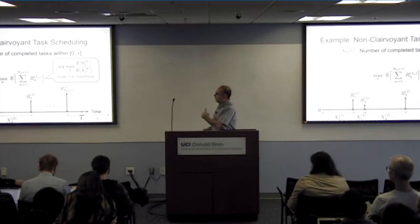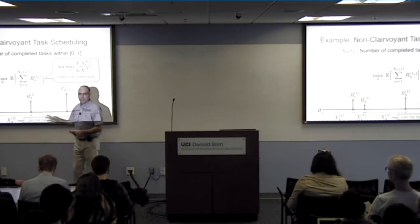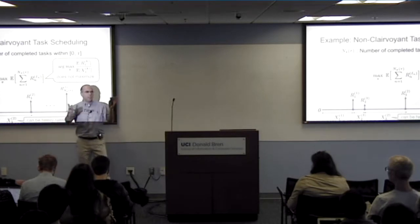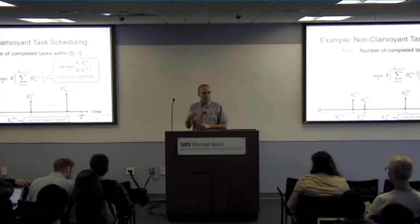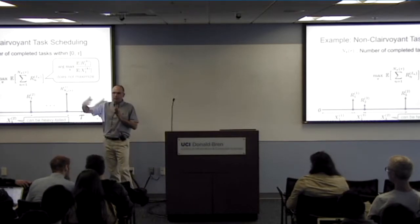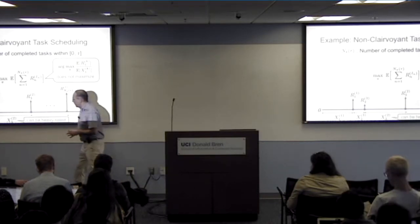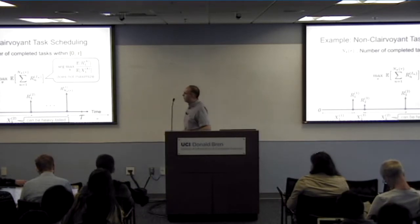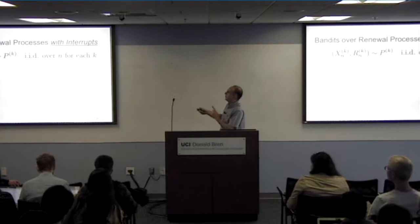Another very important component in many applications is that the time to complete a task is not usually bounded. Whenever there's a human involved in that process, human behavior is well-known to have so-called heavy tails — it takes a long time with a non-negligible probability. Because of that flavor, the random variables we're dealing with can be heavy-tailed. How do we accommodate all of that? This motivates the model of bandits over renewal processes with interrupts. Those familiar with stochastic processes will find it very natural to model this as a renewal process.